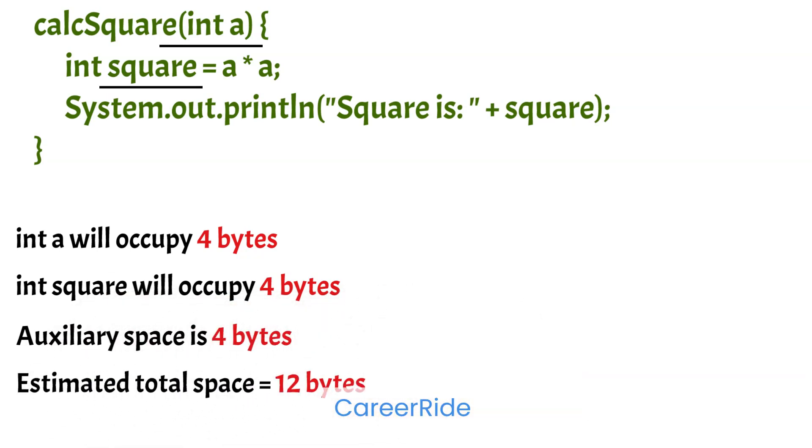So here no matter what is the value of A, the total memory occupied by these variables and auxiliary space would be the same, that is 12 bytes. Whether the value of A is 1, 2, or 5, the total space would always remain the same, that is 12 bytes.